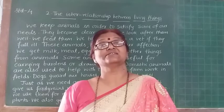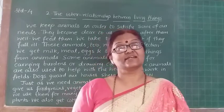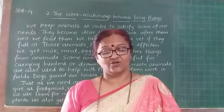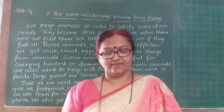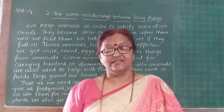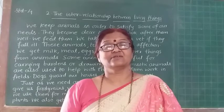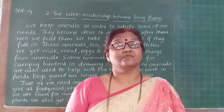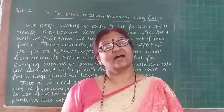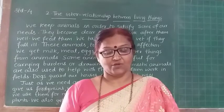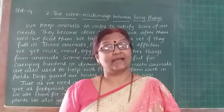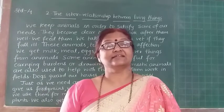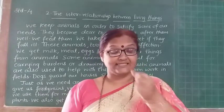The grass is full of insects, but because they are hidden in the grass, the egret cannot see or catch them. As the buffalo treads on the grass, it frightens the insects which fly out. The insects hiding in the grass get afraid and come out. Thus the egret, sitting on the back of the buffalo, swoops down to catch and eat them.